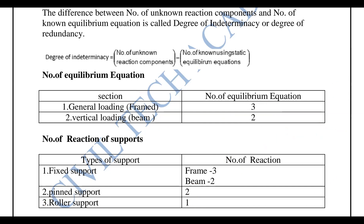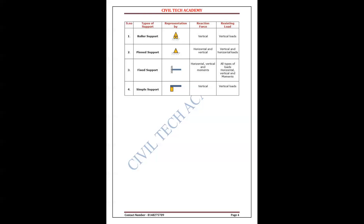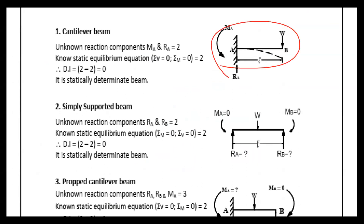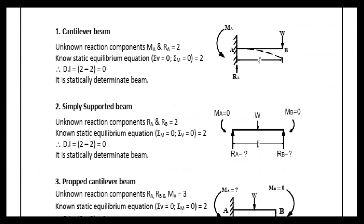Here are some examples. The first example is a cantilever beam. The cantilever beam is a fixed beam. The number of reactions is 2. The number of equilibrium equations is also 2. So 2 minus 2 equals zero. If Ds equals zero, it is a statically determined structure.